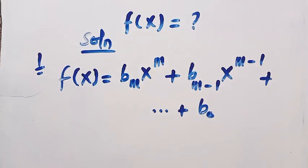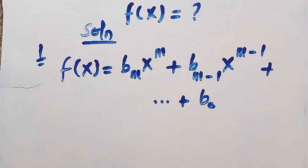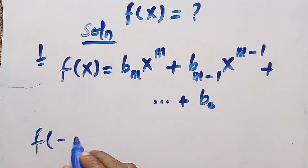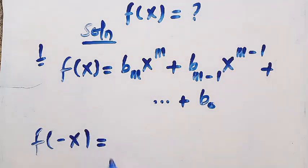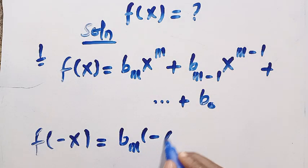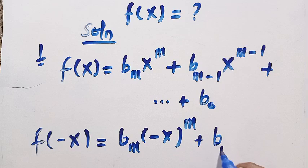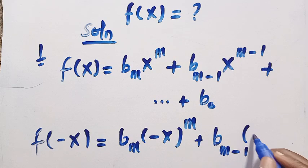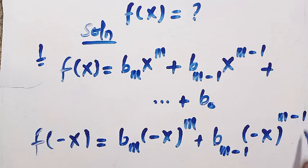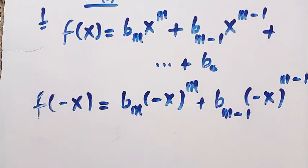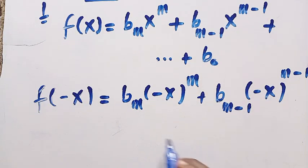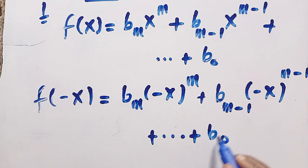Now let's find f(-x). What we do is replace every single x with -x, giving f(-x) = bm·(-x)ᵐ + b(m-1)·(-x)^(m-1) + ... + b0.